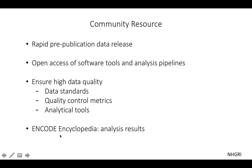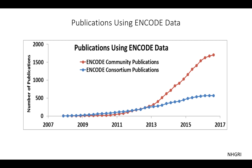Today we will talk about the ENCODE encyclopedia, which is a compilation of results obtained from analyzing ENCODE data. Being a community project, we really care about how useful the data are. NHGRI, specifically Mike Payson, spent lots of time cataloging how many papers cite ENCODE data. Here is a graph separating papers into two groups: publications by ENCODE members in blue, and publications by outside non-ENCODE community members in red. As you can see, more and more outside users have started to find ENCODE data benefiting their research.